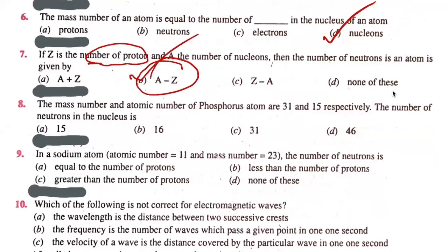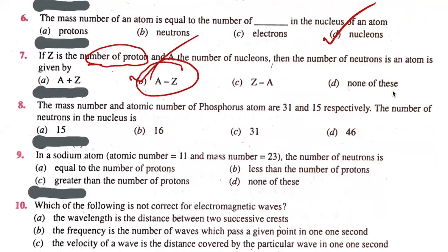Eighth question. The mass number and atomic number of phosphorus atoms are 31 and 15 respectively. The number of neutrons in the nucleus is sixteen. Sixteen is the correct answer.